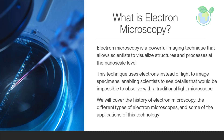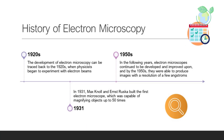In this article, we'll explore the history of electron microscopy, the different types of electron microscopes, and some of the applications of this technology. The development of electron microscopy can be traced back to the 1920s, when physicists began to experiment with electron beams. In 1931, Max Noll and Ernst Ruska built the first electron microscope, which was capable of magnifying objects up to 50 times.